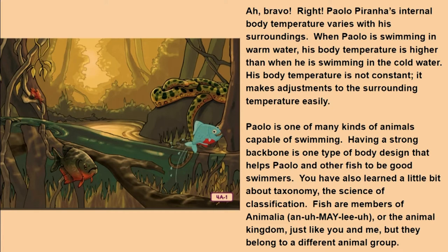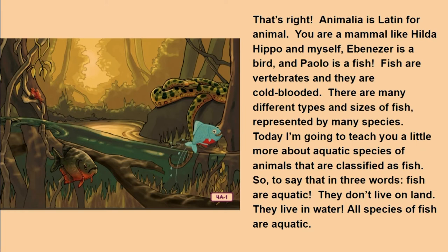You have also learned a little bit about taxonomy, the science of classification. Fish are members of Animalia, or the animal kingdom, just like you and me, but they belong to a different animal group. Animalia is Latin for animal. You are a mammal like Hilda Hippo and myself. Fish are vertebrates and they are cold-blooded. There are many different types and sizes of fish represented by many species. Fish are aquatic — they don't live on land, they live in water. All species of fish are aquatic.